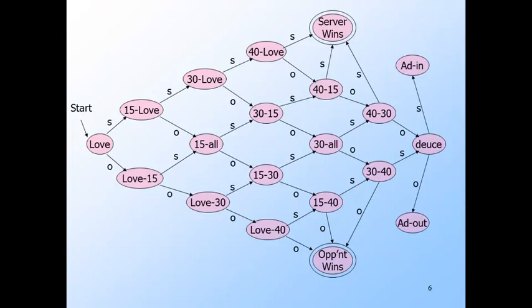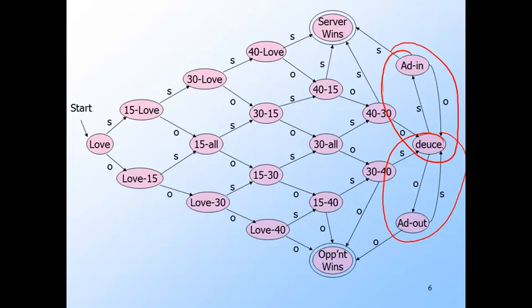From deuce, you have to win by two points, so it is impossible for either player to win immediately. If the server wins the next point, they are ahead by one — the strange name for this state is 'add in,' or advantage in. Symmetrically, if the opponent wins in state deuce, we go to 'add out.' In state add in, if the server wins the next point, they win the game; but if the opponent wins, you're back to deuce. Likewise, from add out, a server win puts you back in deuce, but an opponent win gives the opponent the game. The loops involving deuce, add in, and add out allow for an infinite number of possible strings of S's and O's to lead to a final state.